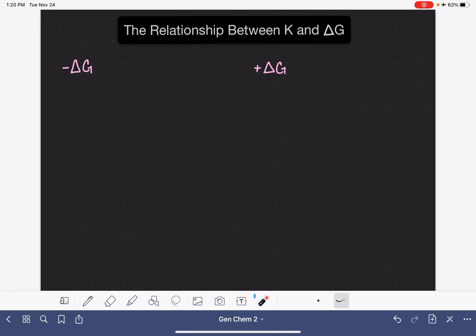This video is going to look at the relationship between the value of the equilibrium constant K and whether or not a reaction is spontaneous or non-spontaneous based on the sign of delta G.